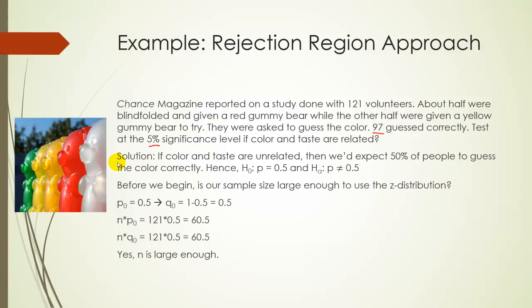Let's test at the 5% significance level if color and taste are related to each other. So to start this off, we have to do a little bit of critical thinking, and we realize that if color and taste are completely unrelated, then we'd only expect 50% of the people in any sample to get it right, or 50% of the people in our population. So our H0 would be that taste and color are unrelated, so P would be equal to 0.5, and our Ha would be that they are related to each other, which means the proportion is not equal to 0.5.